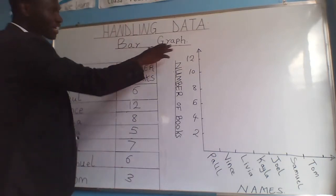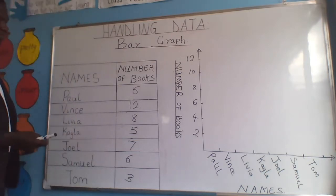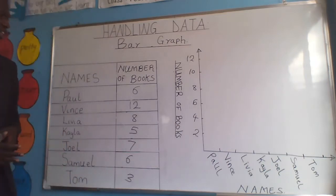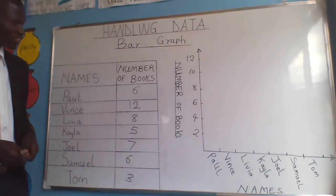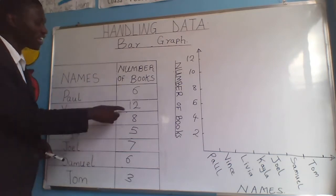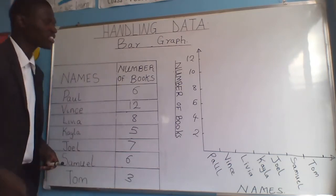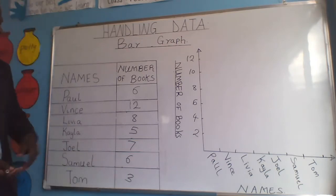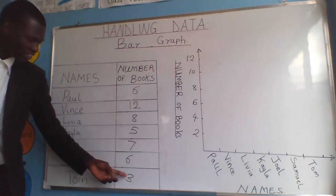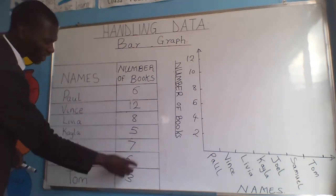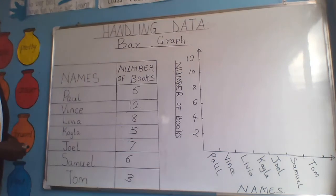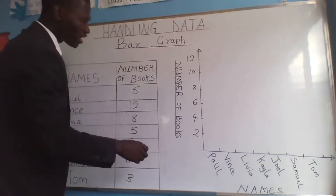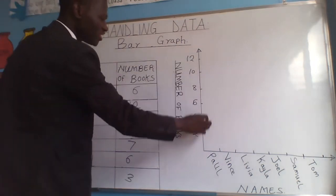In a bar graph, you have to find the scale — how to do this. We have to find the scale. For the selection of the scale, you have to look for the largest number and the smallest number. For example, if Vince has 12 books and Tom has 3 books, 12 is the largest number and 3 is the smallest number.